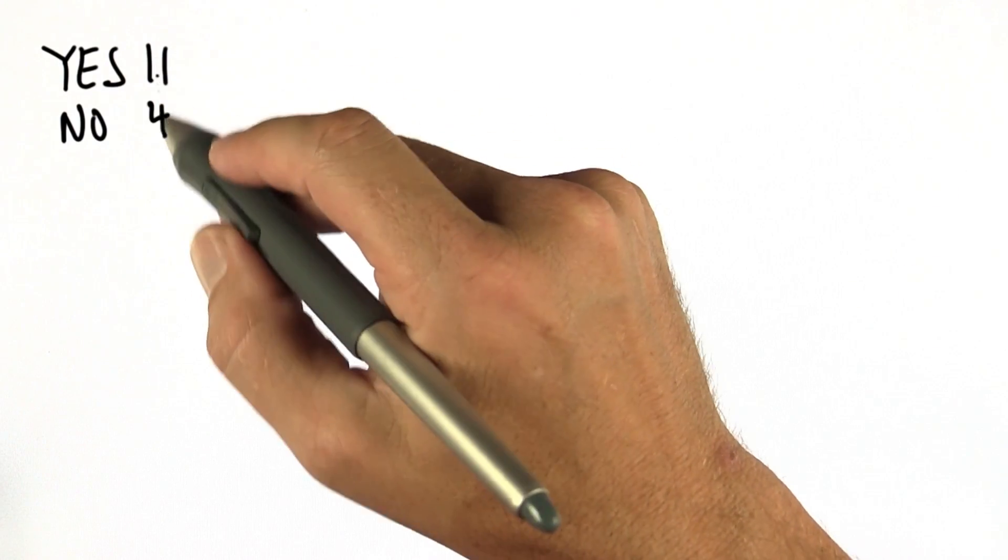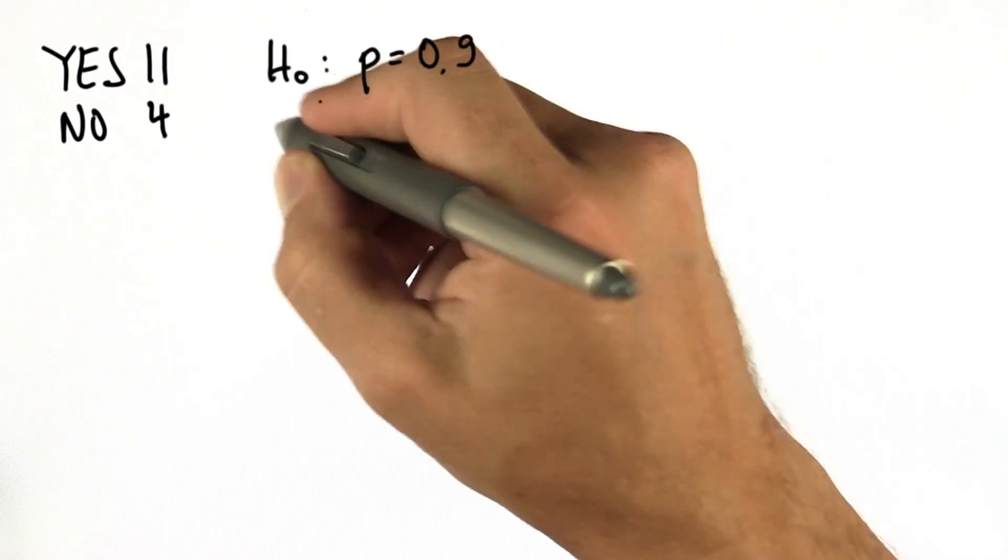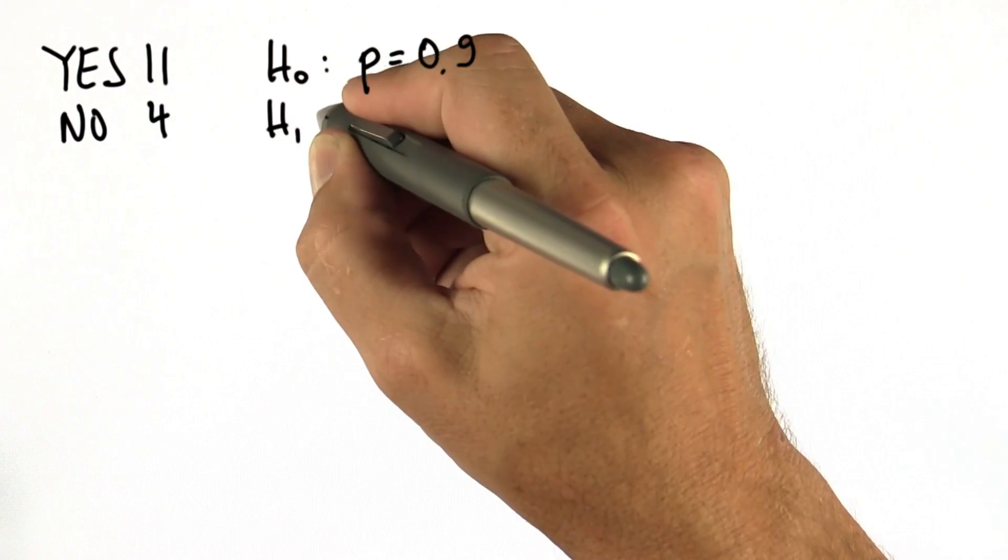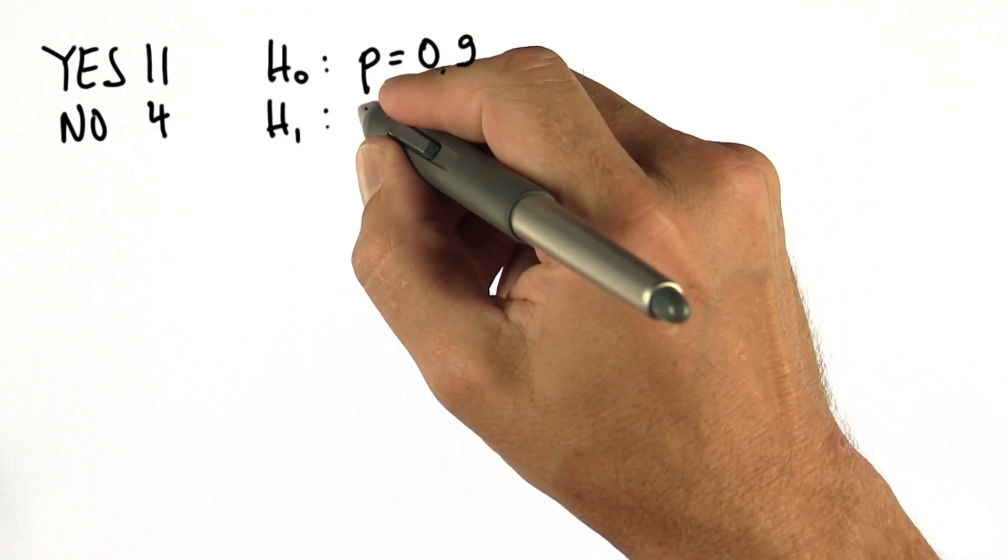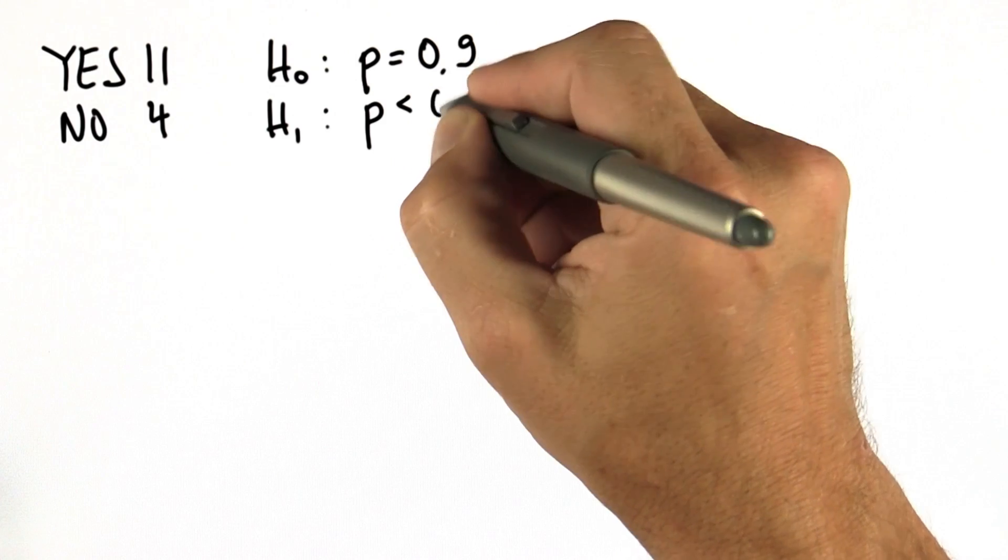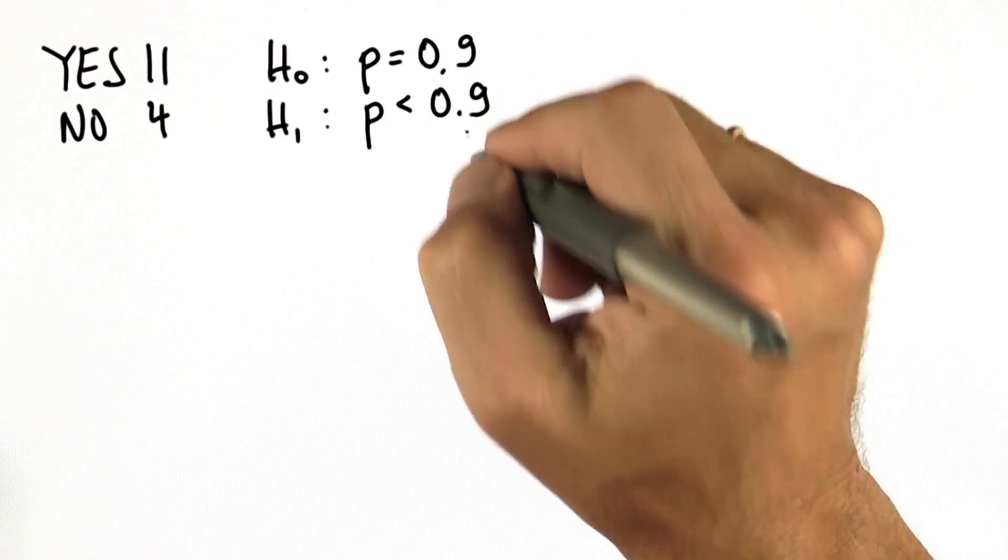To recap, we have in our sample 11 yeses and 4 noes. And our null hypothesis equals p equals 0.9. And our alternate hypothesis is it doesn't work as well as advertised. So p smaller than 0.9.